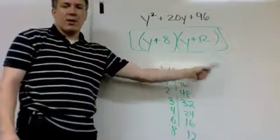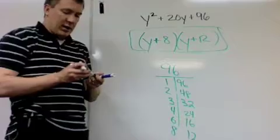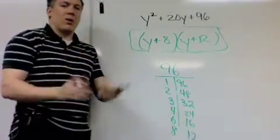Now you could use the double distributive or FOIL to multiply this out to prove that it was correct. But that is how you factor these simple quadratics.